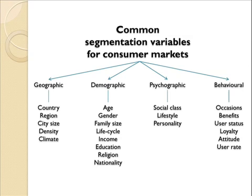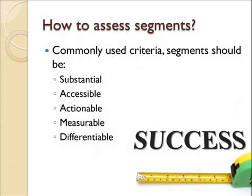Demographic variables may also be used, wherein younger customers may be considered more attractive for small or budget cars. A good example of psychographic variables used in the industry may be where status brands like Mercedes and BMWs are targeted to upper class individuals. Finally, behavioural variables like benefits sought from a product may also be used for segmenting the market.